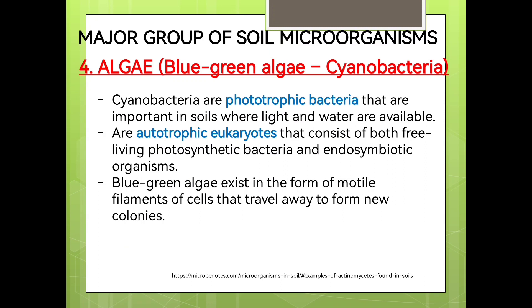The next group is the algae, particularly the blue-green algae or the cyanobacteria. Cyanobacteria are phototrophic bacteria that are important in soils where light and water are available. They are autotrophic eukaryotes that consist of both free-living photosynthetic bacteria and endosymbiotic organisms.